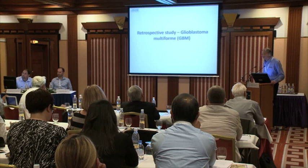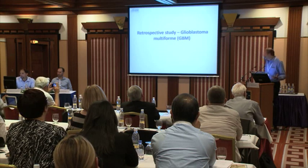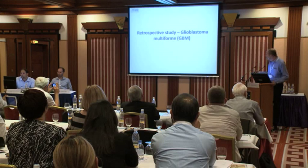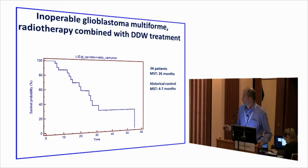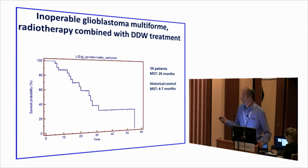For glioblastoma — arguably the worst tumor type — we had 34 patients with a median survival time of 26 months. The historical control is four to seven months.